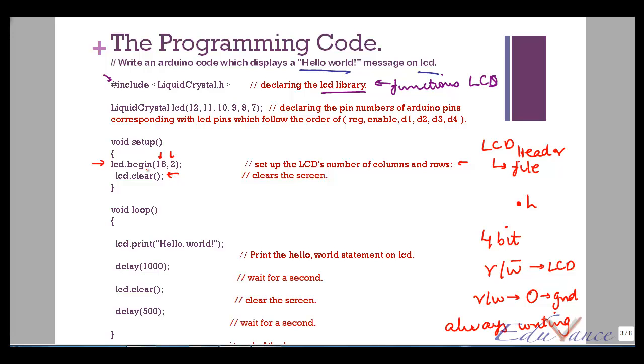And then I have my loop where I use the function dot print. So dot print is a function that will help me display a value. And then I have the one-second delay, then I clear the LCD, then I again have a 500 millisecond or half a second delay.